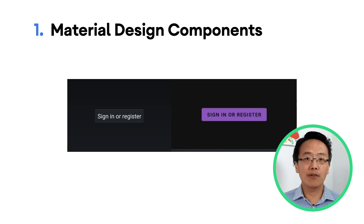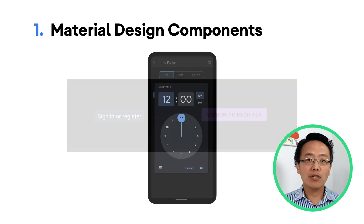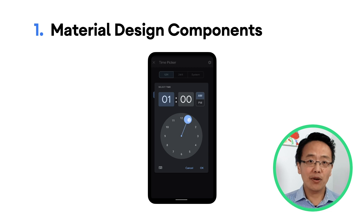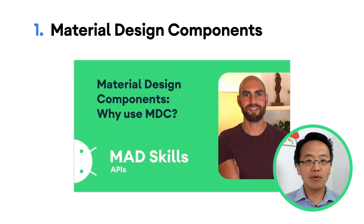First, we strongly recommend that you use material design components to build your app and not the platform default components. Android's look and feel has changed dramatically from Holo in Android 4 to today's continuously improving material design system. In addition to giving your app that modern look and feel, material design components also offer many ready-to-use complex widgets that will save you a lot of time. My personal favorite is the time picker. Imagine having to code all of this from scratch — with material design components, this is just one import away. Check out this modern Android development series on material design components for more information.